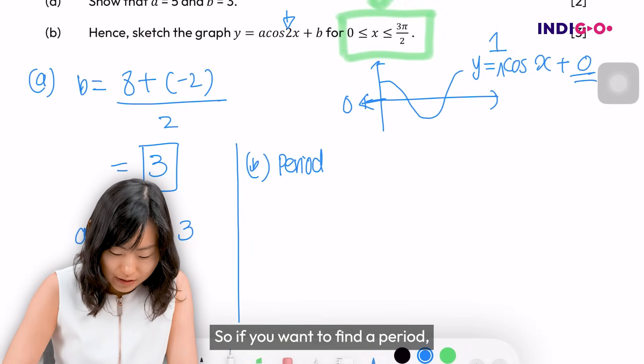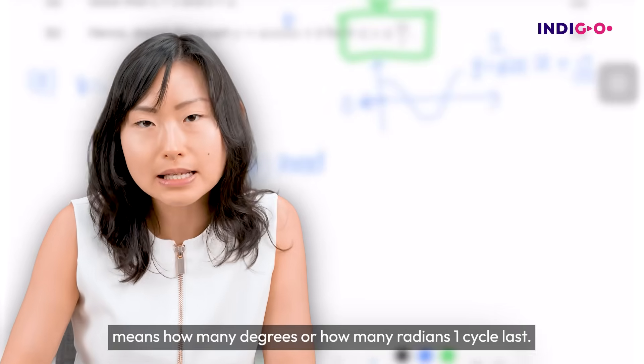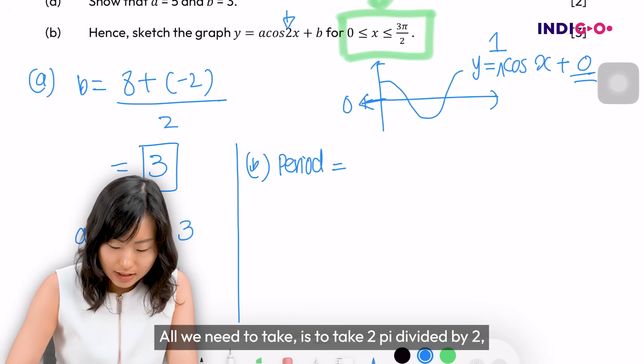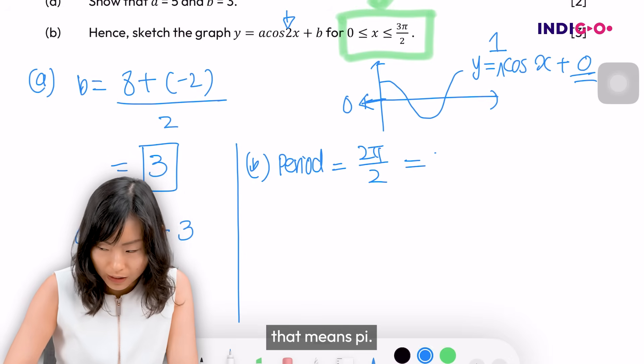If you want to find the period - period in simple terms means how many degrees or how many radians one cycle lasts - all we need to take is 2π divided by 2, which equals π.